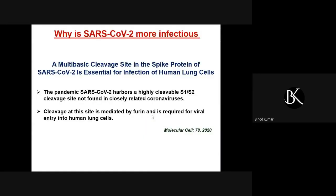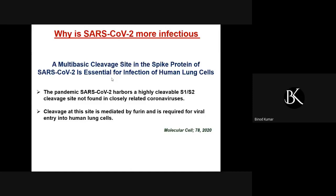Why is SARS-2 coronavirus more infectious? There is a multi-basic cleavage site in the spike protein of SARS coronavirus 2, which is essential for the infection of human lung cells. The spike protein plays a crucial role in binding to the cell — binding is the first crucial event for any viral infection to be successful. This pandemic SARS virus harbors highly cleavable S1/S2 cleavage sites not found in closely related coronaviruses, and these S1/S2 sites are important for fusion and entry of the virus.